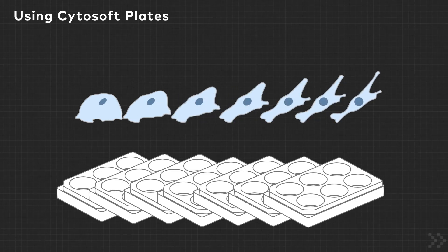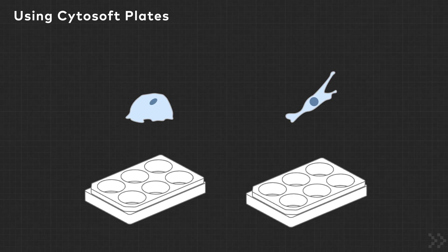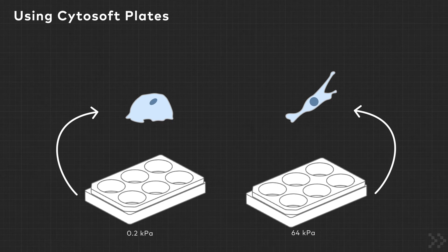Next, continue your research by narrowing in on a few stiffnesses. For example, order the pack of 6-well plates for 0.2 and 64 kPa to really start focusing on the stiffness differences.